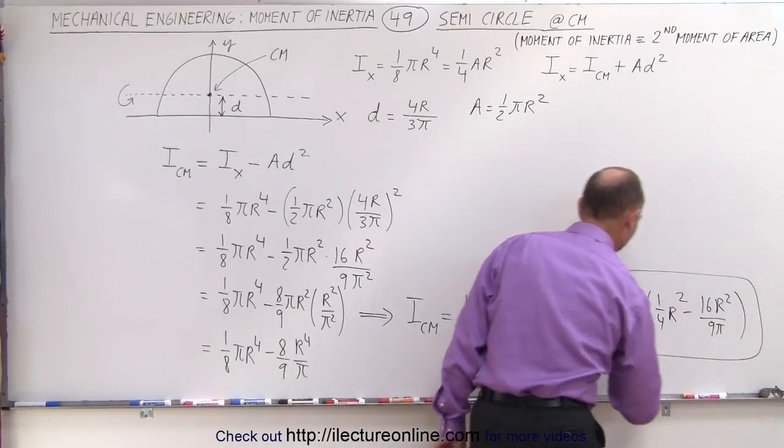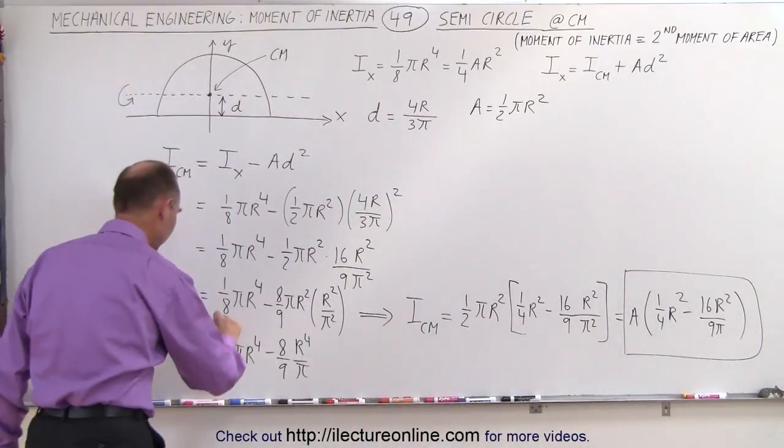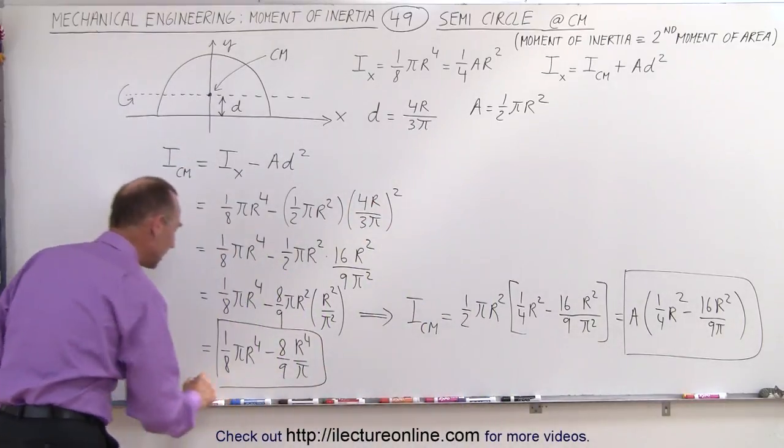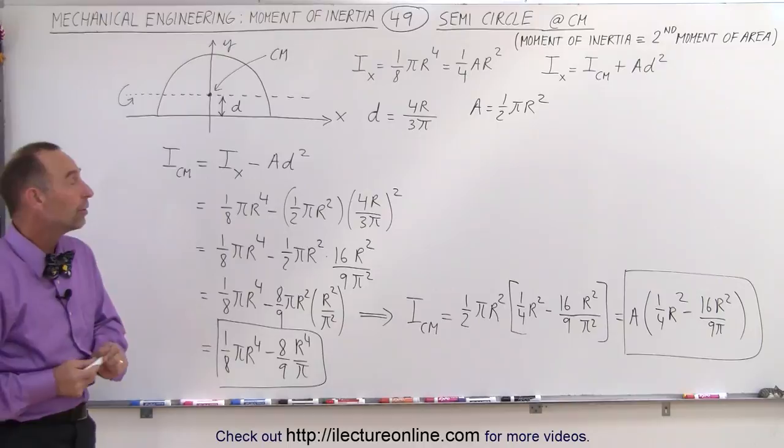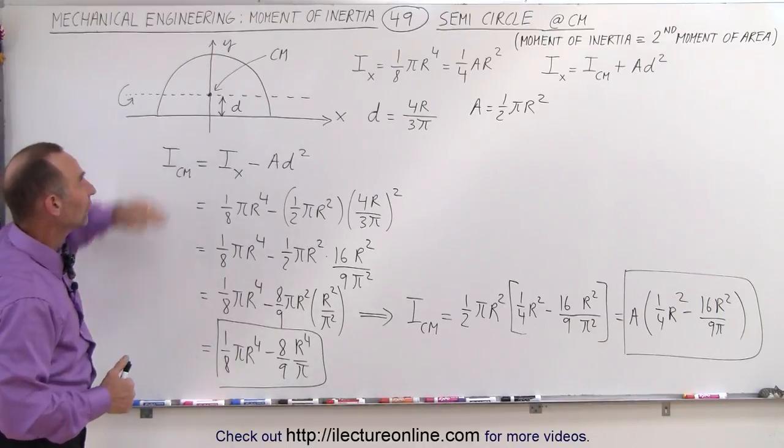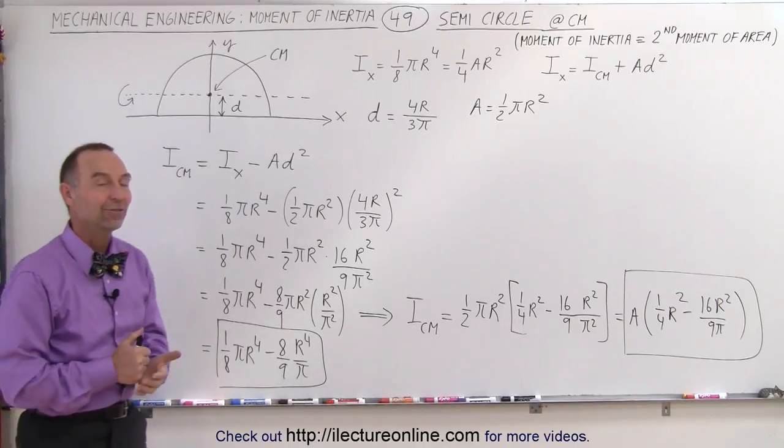And so there's two ways in which I can find the moment of inertia of a semicircle relative to its center mass if the moment of inertia at the x-axis is known. And that's how it's done.